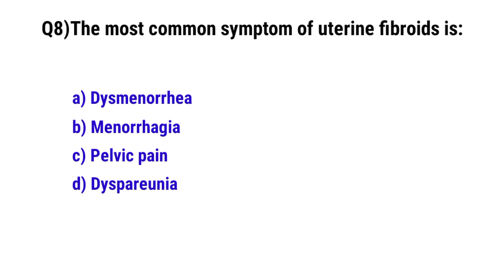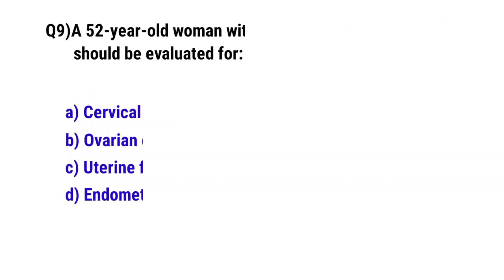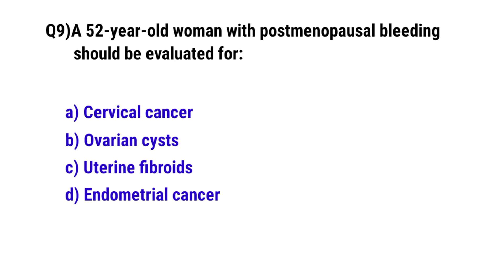Question number eight: The most common symptom of uterine fibroid. The correct option is B, menorrhagia.